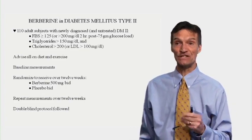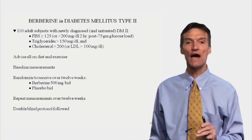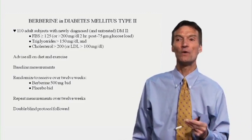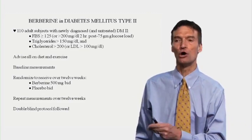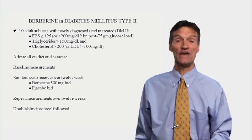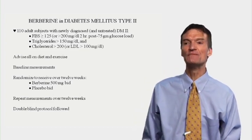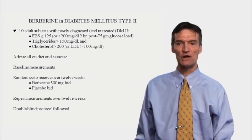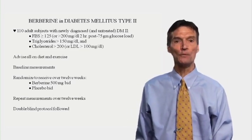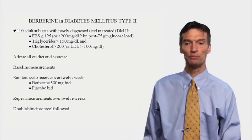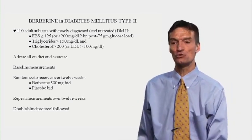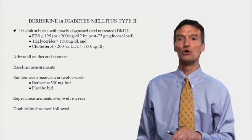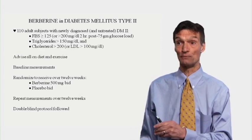How about in type 2 diabetes? 110 adults with newly diagnosed and not yet treated type 2 diabetes — fasting sugar above 125 or post-glucose load sugar of 200, high triglycerides above 150, and high cholesterol. Put them all on diet and exercise, do baseline measurements, randomize them to receive over 12 weeks: berberine 500 mg twice daily, or placebo. Repeat the measurements at 12 weeks. Double-blind protocol was followed — neither subjects nor researchers knew who was taking placebo or berberine.